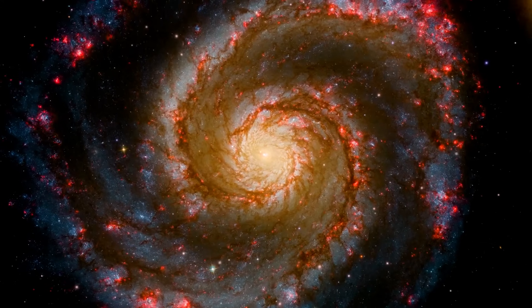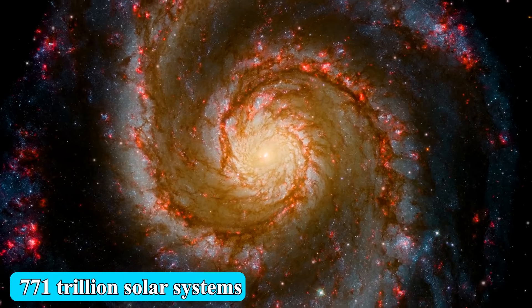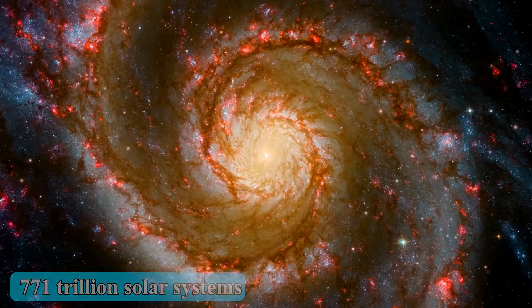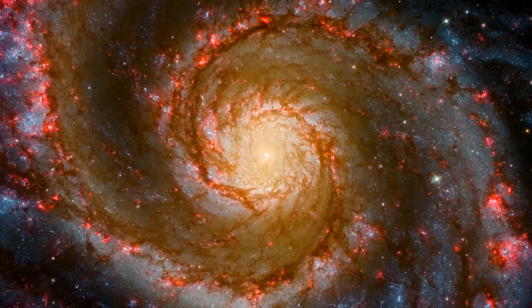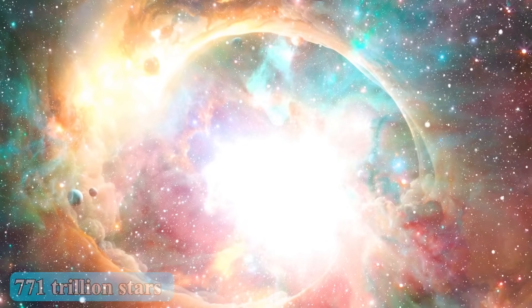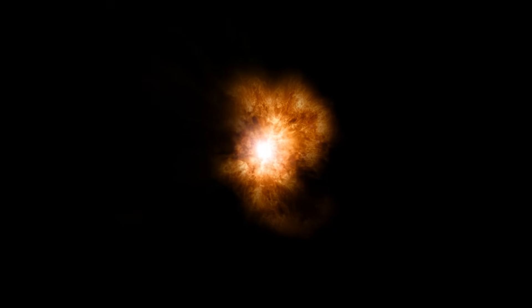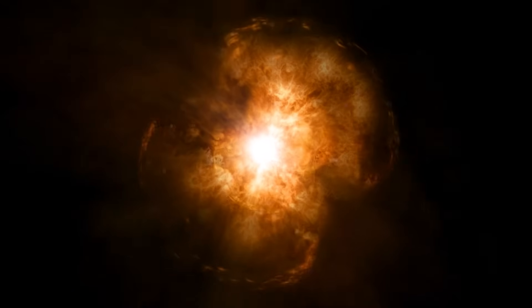Recently, the JWST disclosed a startling fact. Over 771 trillion solar systems have inexplicably vanished from our universe. This implies that more than 771 trillion stars, along with their associated planets, have ceased to exist. Such an occurrence is far from normal and has never been witnessed before.